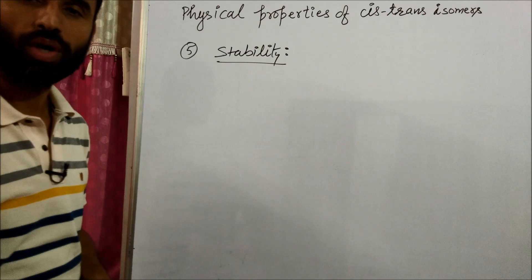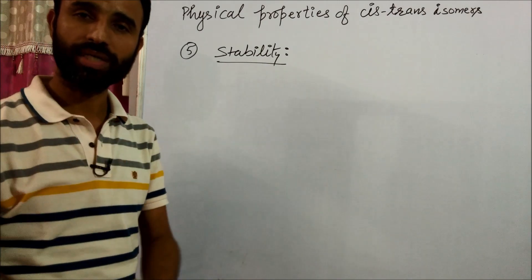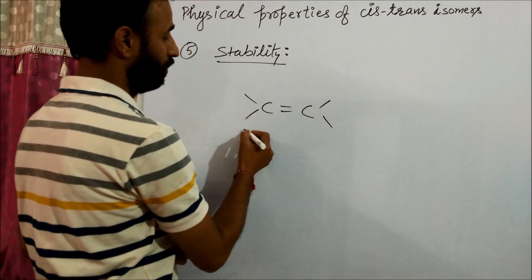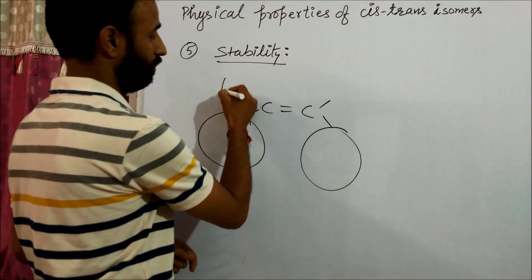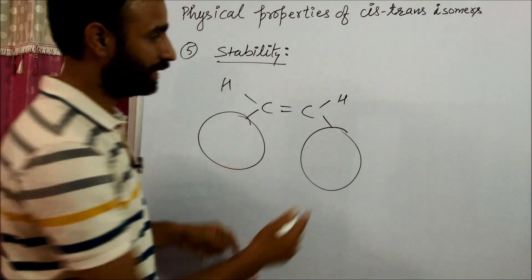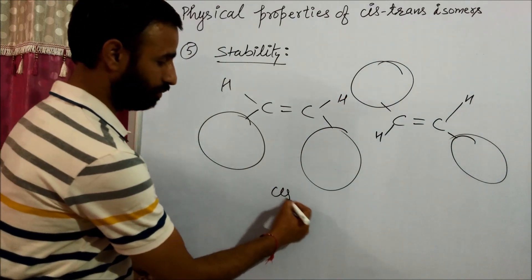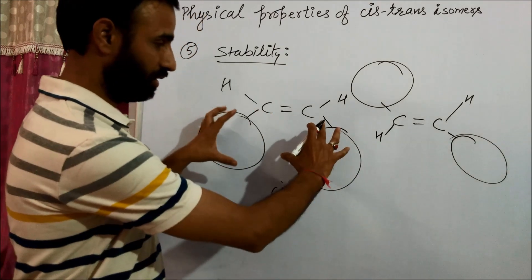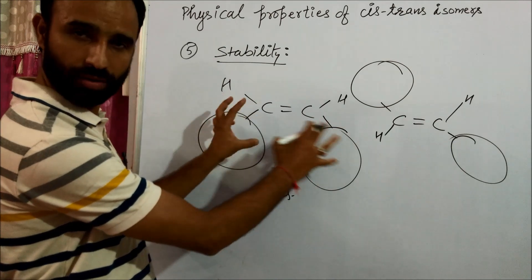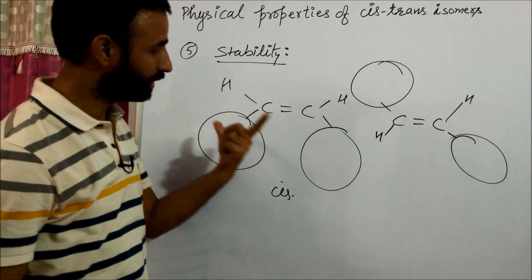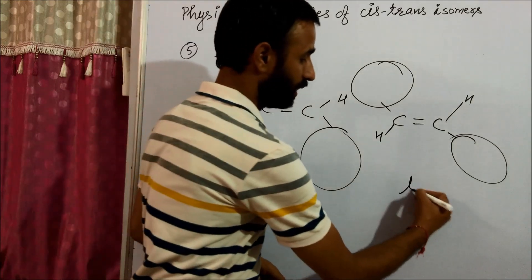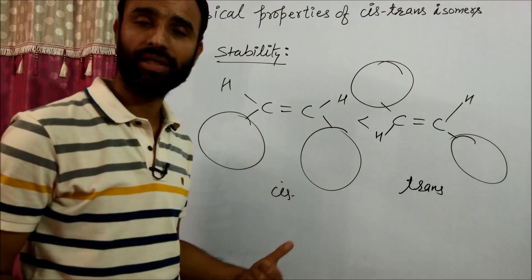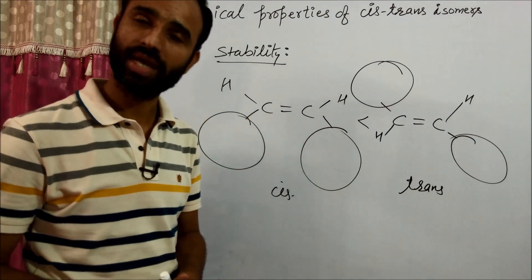What about stability? If bulky groups are attached on one side, cis alkene has more steric hindrance. Steric hindrance is hindrance due to size. If bulky groups are present, they hinder more and stability is less. So trans alkene is more stable than cis alkene due to steric reasons as well.